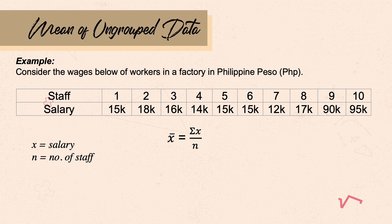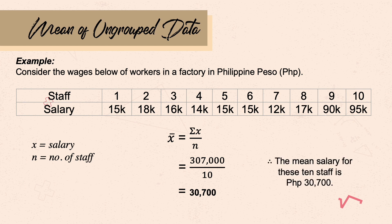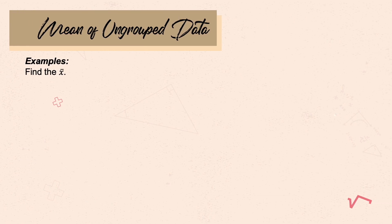Consider the wages of 10 workers. They have different wages. To identify the mean, find the sum of the wages of the 10 workers first. Using the formula, the sum is 307,000. Divided by the sample size, which is 10, the mean salary is 30,700.